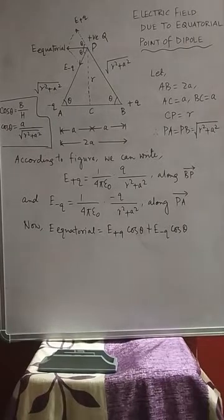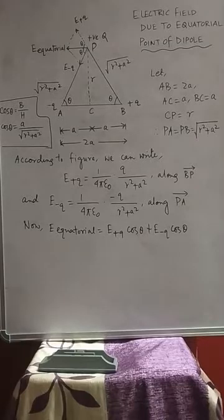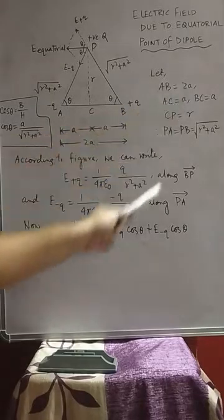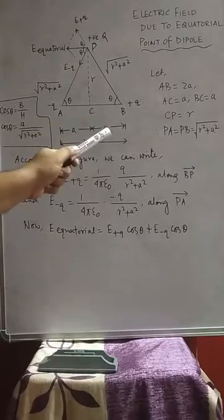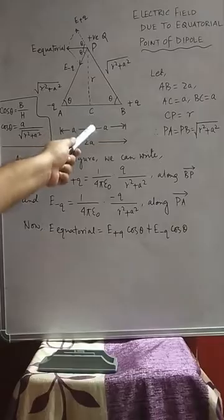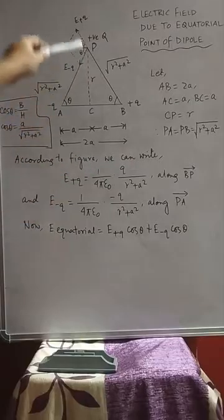We will consider the electric field due to the equatorial point of a dipole. Here we have considered PAB as an equilateral triangle in which angle PAB is theta and angle PBA is also theta. AB is our dipole so AB = 2a. C is the midpoint of the dipole, so AC = a and BC = a.